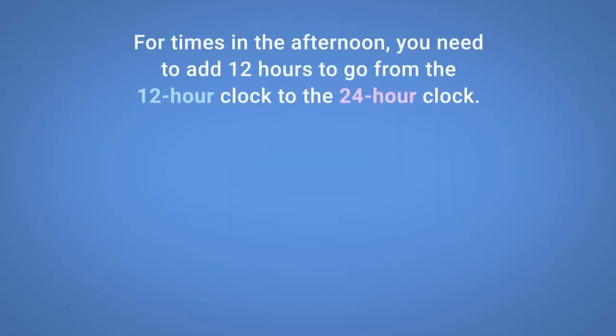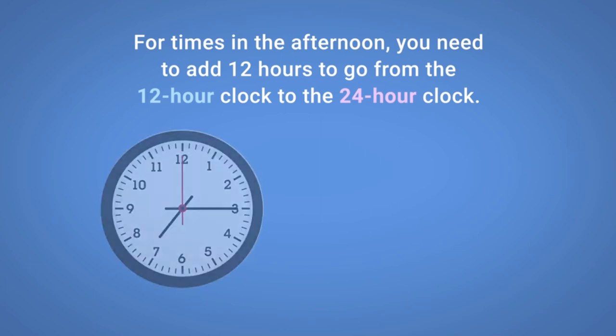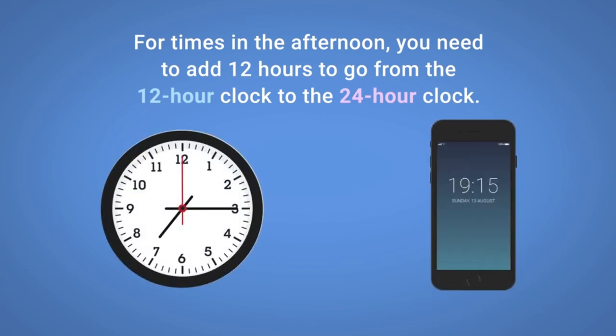For times in the afternoon, you need to add 12 hours to go from the 12-hour clock to the 24-hour clock. 7:15pm is 19:15 on a 24-hour clock.